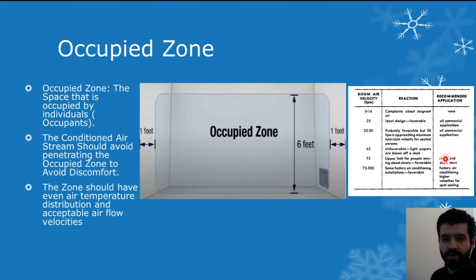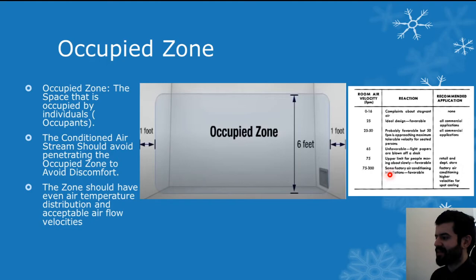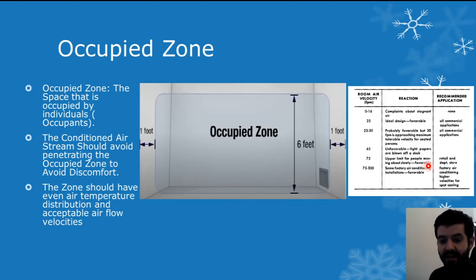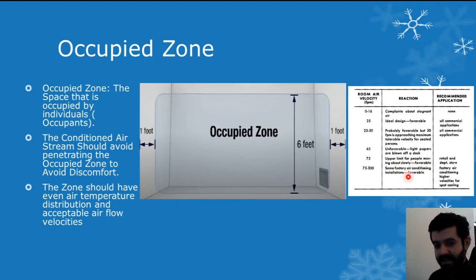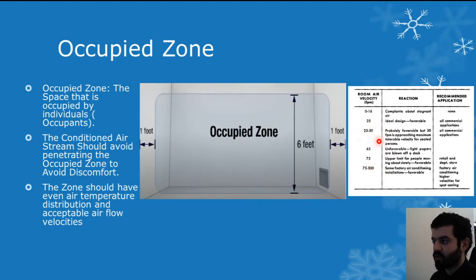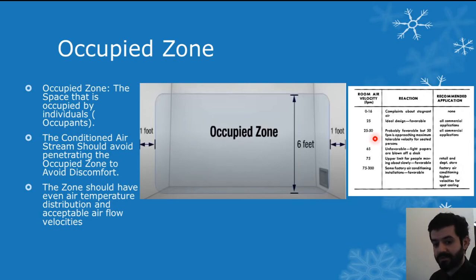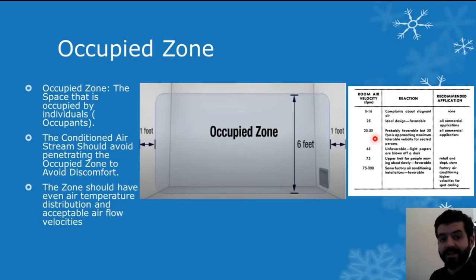The 75 FPM range is recommended for retail or department stores where people are moving back and forth rather than sitting. The 75 to 300 FPM range is favorable mainly for factory air conditioning installations, with really high ceilings and large open spaces that can tolerate such increased velocities. For commercial and residential applications, we should stay within 25 to 50 FPM — the comfortable range ensuring proper air distribution and even temperature throughout the room.